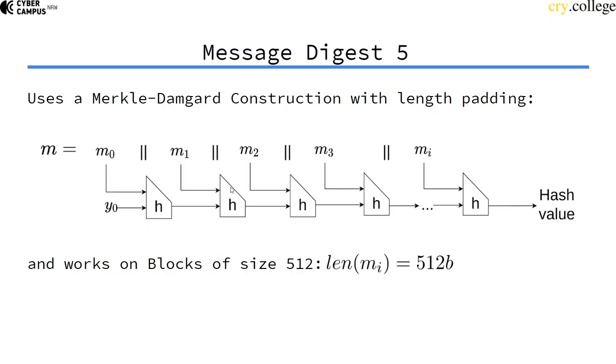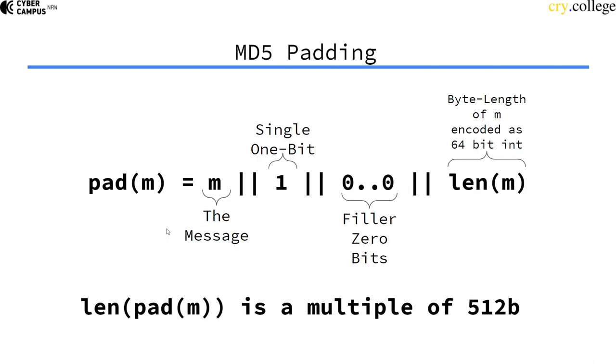It's a Merkle-Damgård, so all we have to look at actually is just the underlying compression function. First, padding is length padding and the length is encoded in 64 bits in the padding, but that's a technical detail.